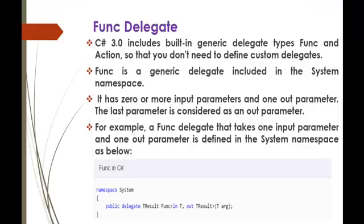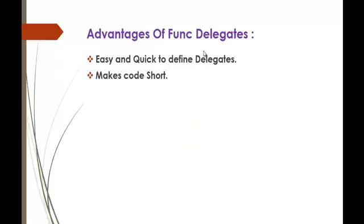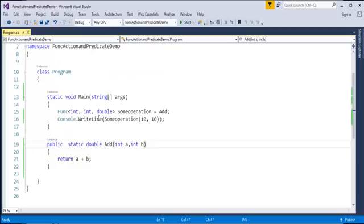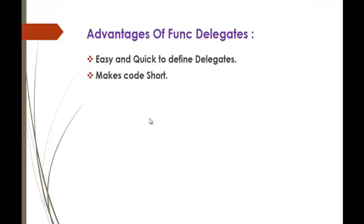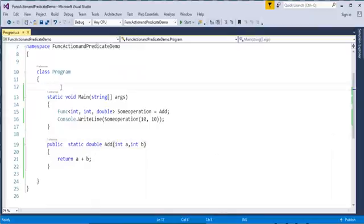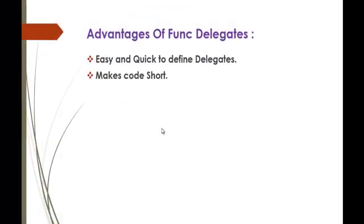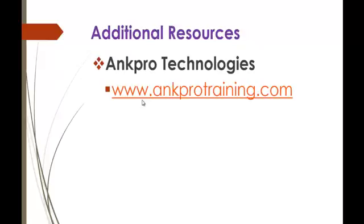Coming back, let's recall: func is a generic delegate type included in the system namespace. That's the advantage of Func Delegate. What are the advantages? Easy and quick to define delegates — that's what we did here in Visual Studio. It's very easy to create a delegate and invoke the method, that's the major advantage of Func Delegate, and it makes the code short. If I had used the custom delegate, it would have extended to around 30 lines of code, but now it's just 25 lines. That's what makes code short. Thank you for listening, have a great day — please subscribe to ANKPRO Training below and don't forget to give feedback. Thank you.